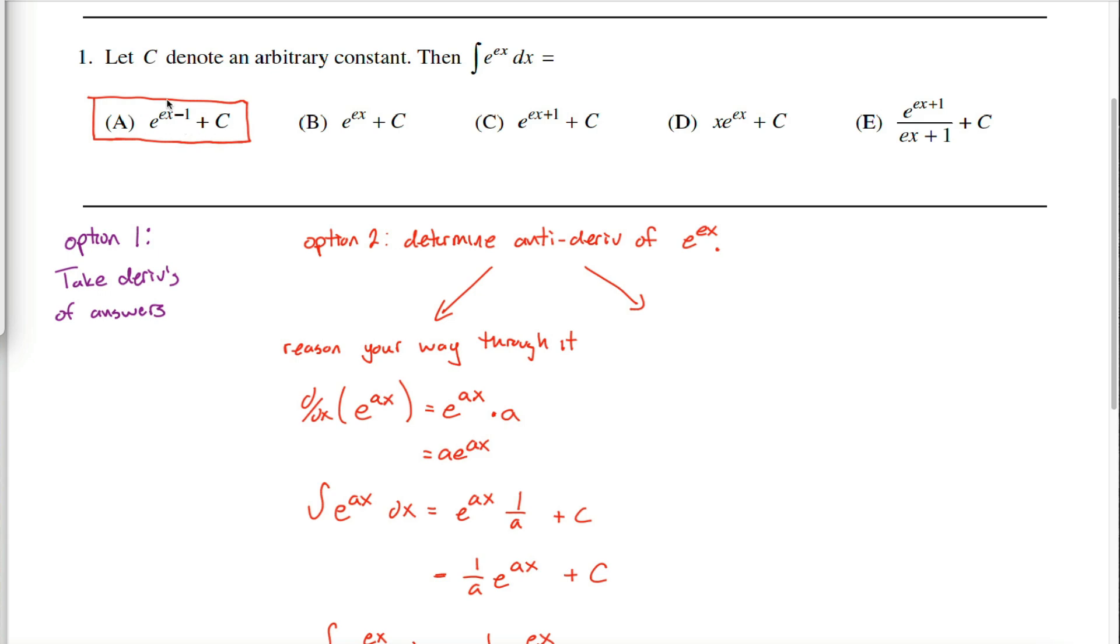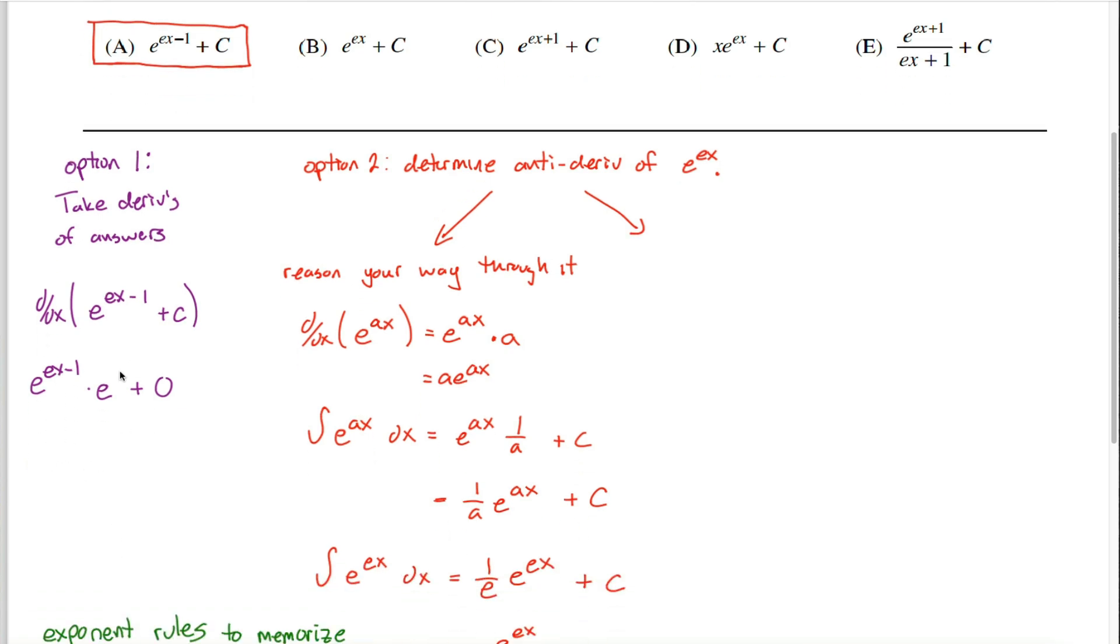A nice consequence of this being the first of the five answers is if you went with option 1 and just took the derivative of all the answers, you wouldn't have to get very far before finding your answer. The derivative of a sum is the sum of the derivatives. For the derivative of this side, you use the chain rule. I got e raised to the ex minus 1 power times the derivative of ex minus 1, which is just e. Then I add the derivative of a constant, which is just 0.